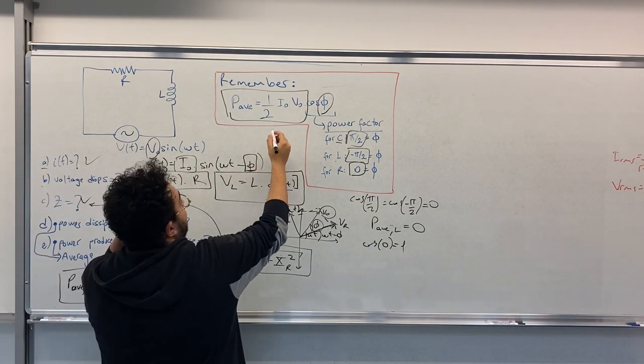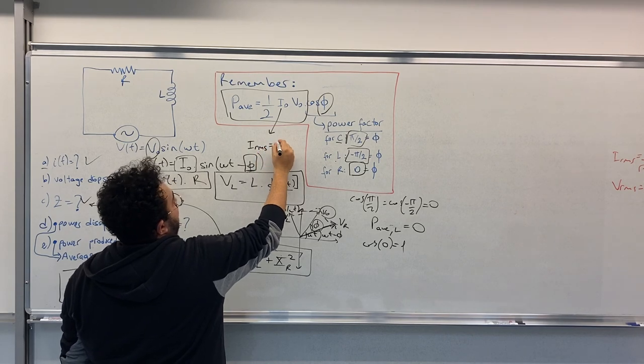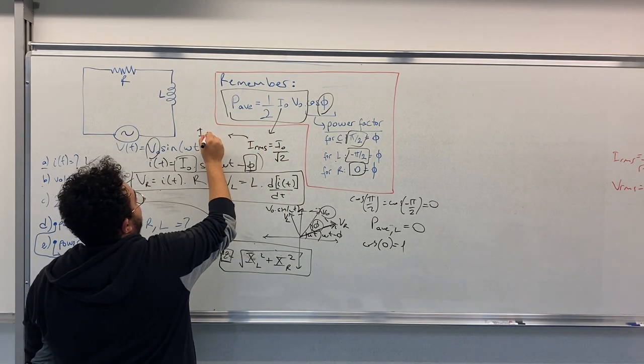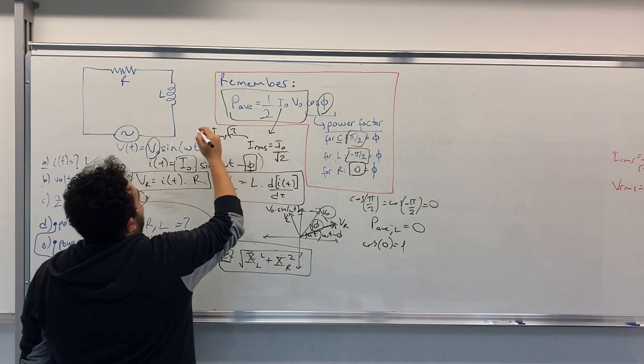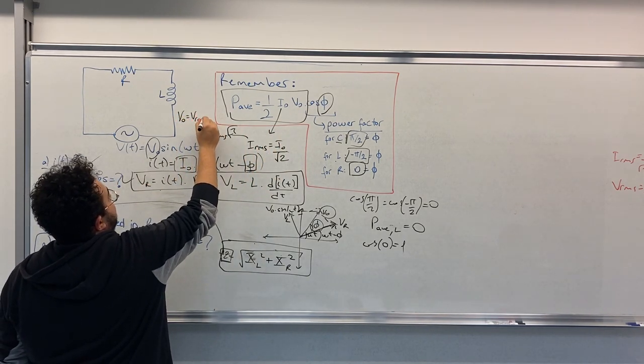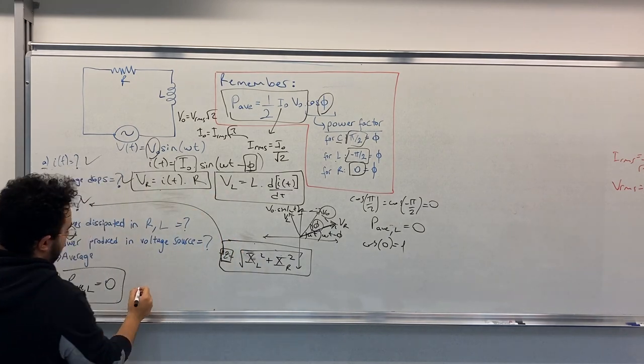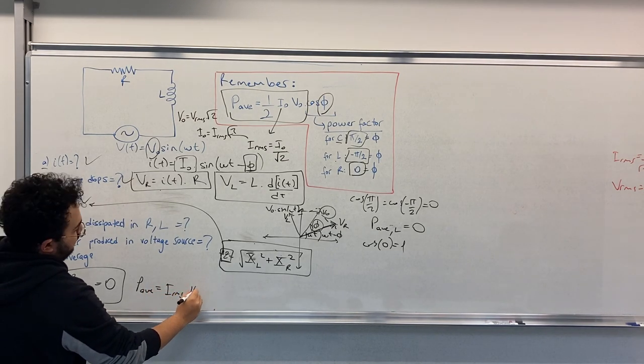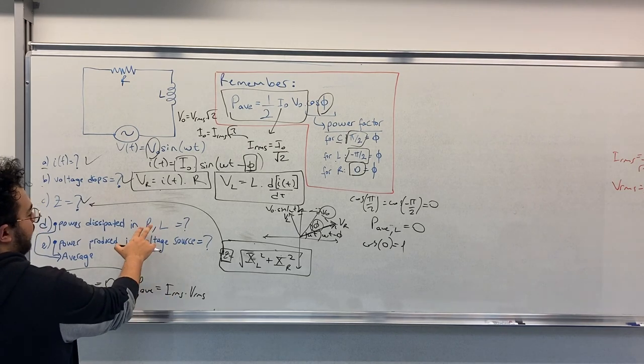Remember that IRMS equals I0 over square root 2, so you have actually I0 equals IRMS times square root 2. For V0, you have the same. V0 equals VRMS times square root 2. This is how you can find the voltage drop across R.